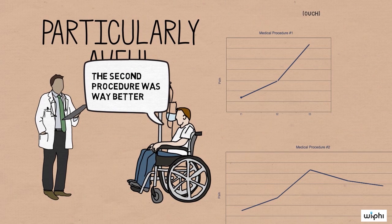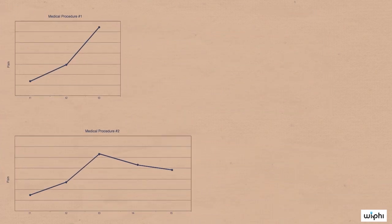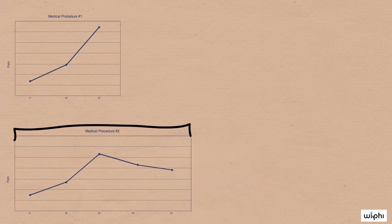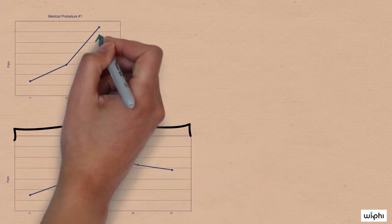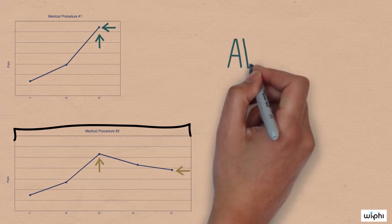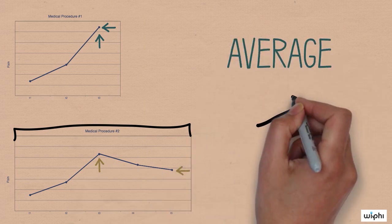Kahneman and colleagues' clinical trial highlights one of the most surprising things about our peak end heuristic, namely the information that it doesn't take into account. And that's how long the event happens to be. Patients would rather be in pain for twice as long, so long as the average of the peak and end is more pleasant.